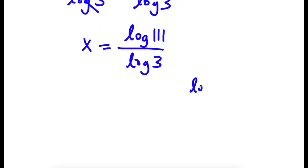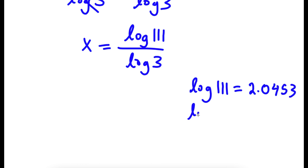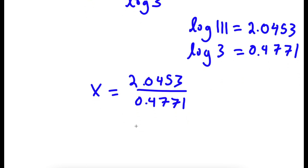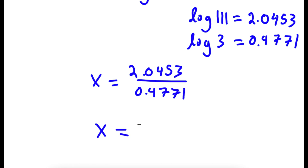Now log 111 is equal to 2.0453, and log 3 is equal to 0.4771. So I have x is equal to 2.0453 over 0.4771, which is equal to 4.2869.